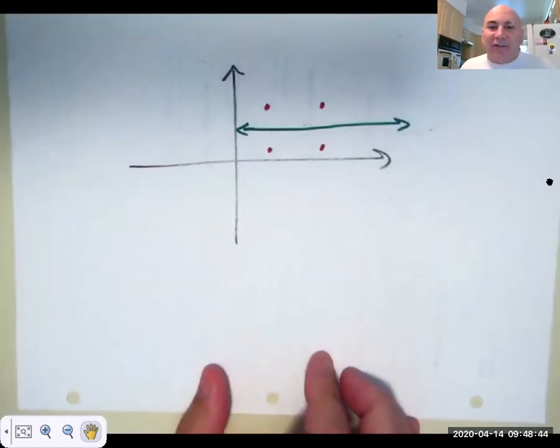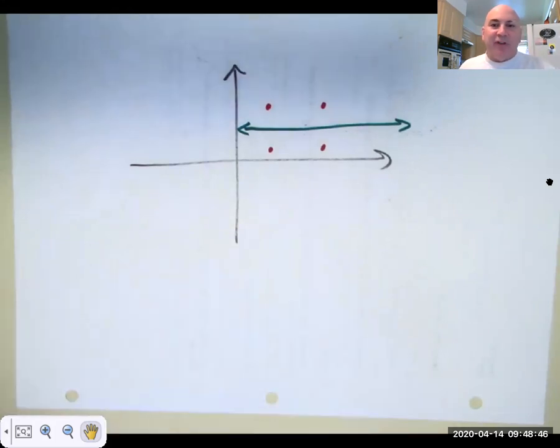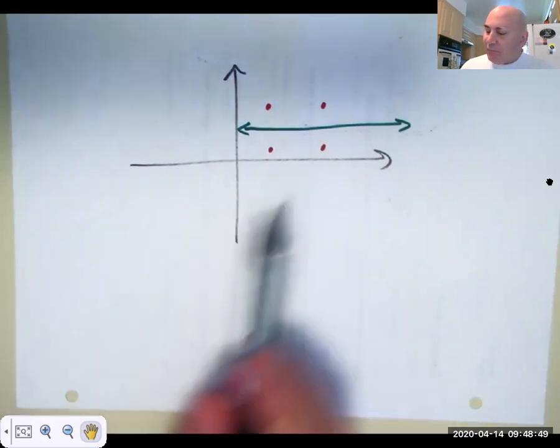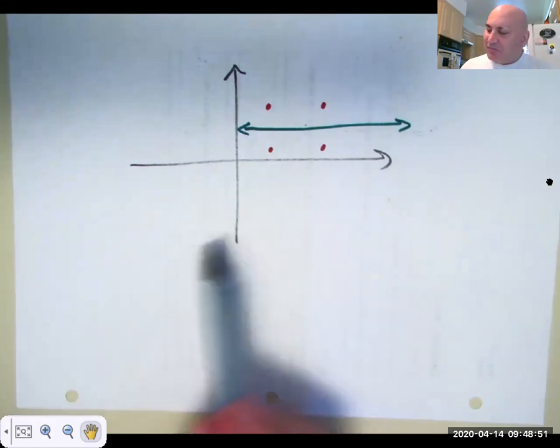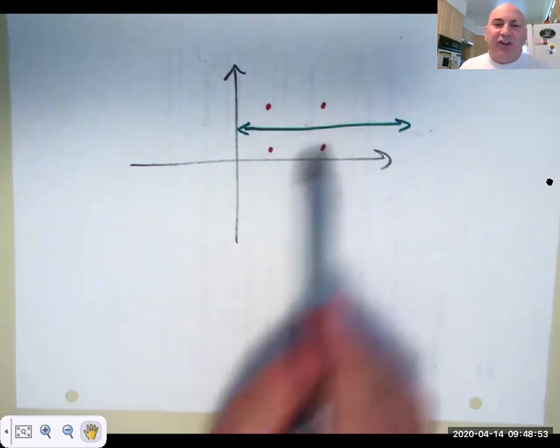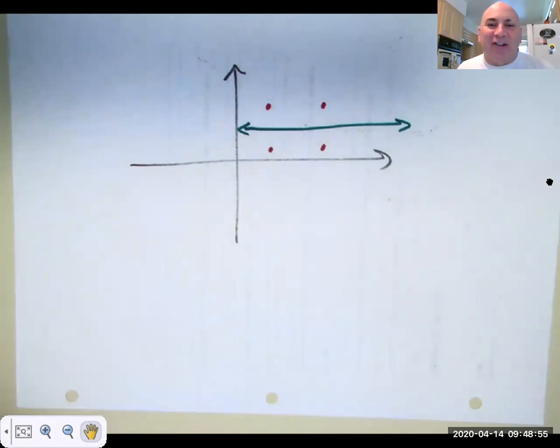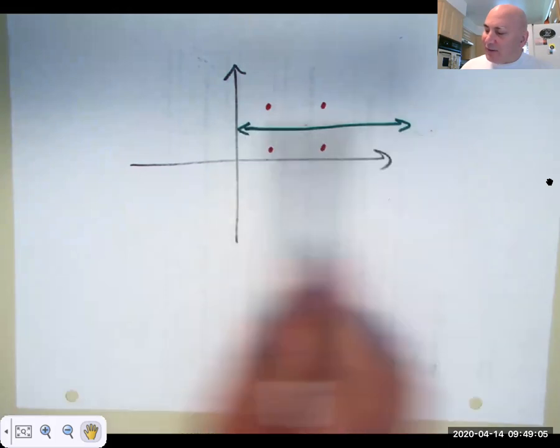I talked about this in the last video. If you draw, if you have any data set and you put your data points in a rectangle like that, you're always always always going to get a correlation coefficient of zero. And therefore this line isn't predictive. This line isn't predictive because if I said what if x is here?